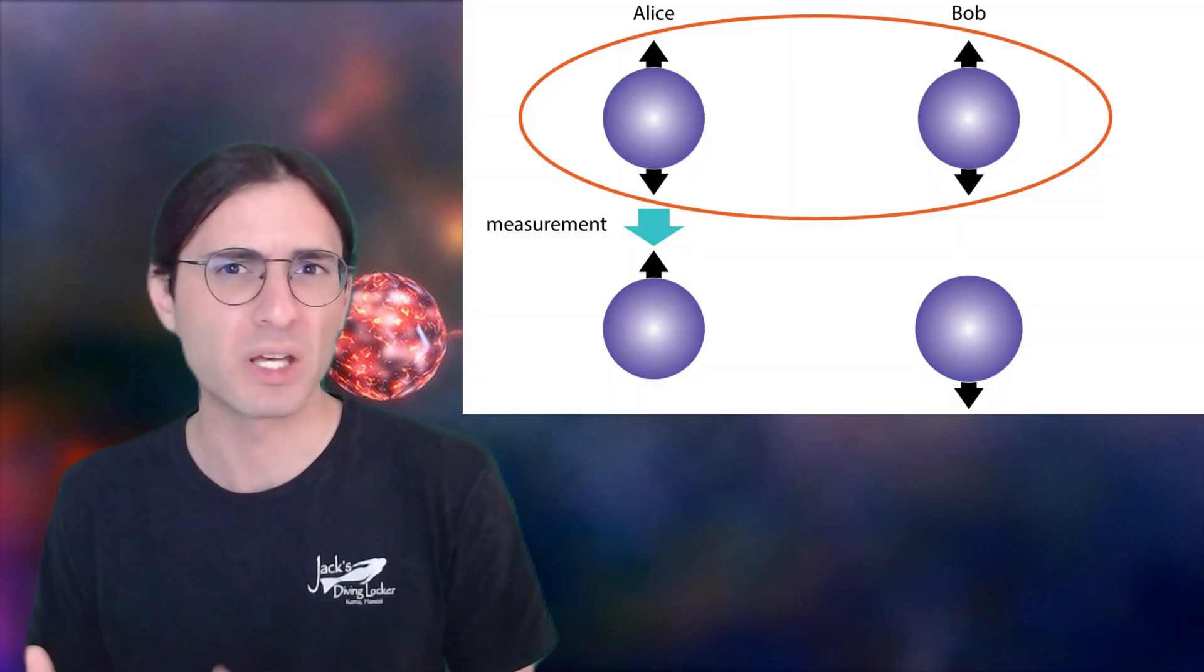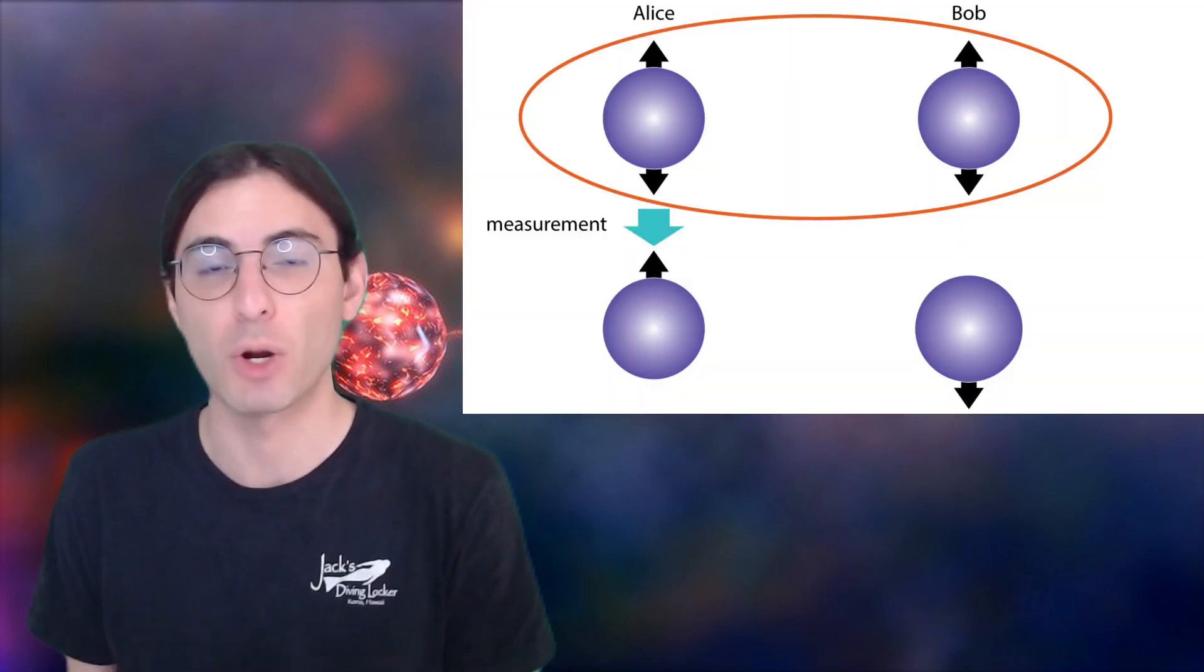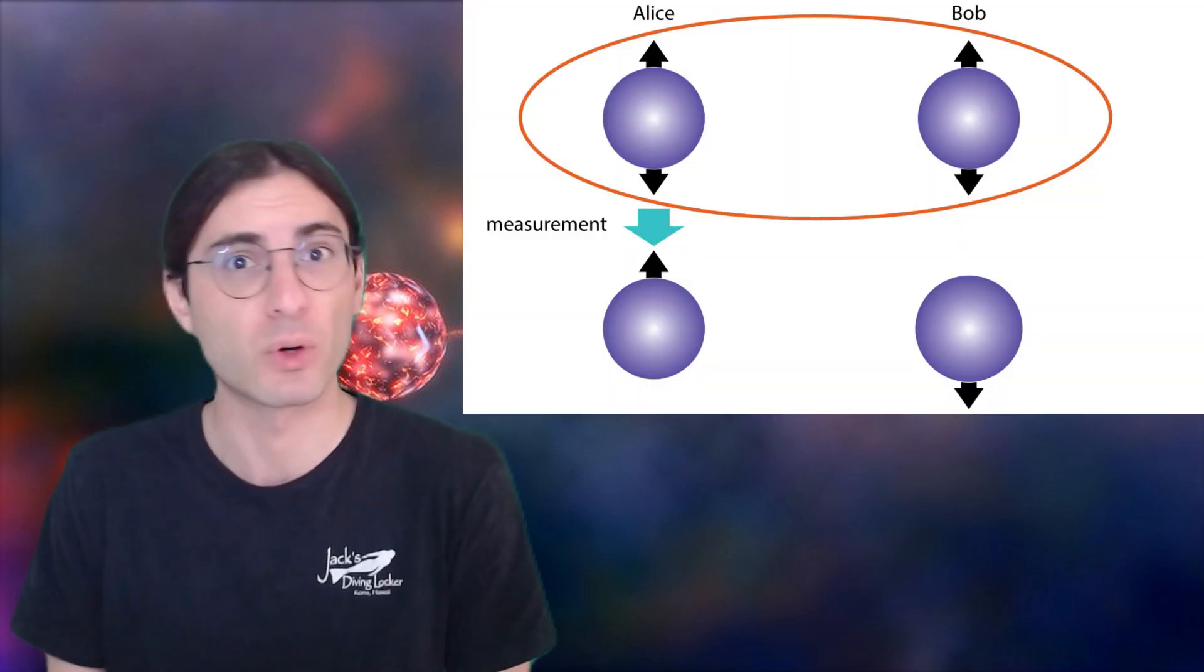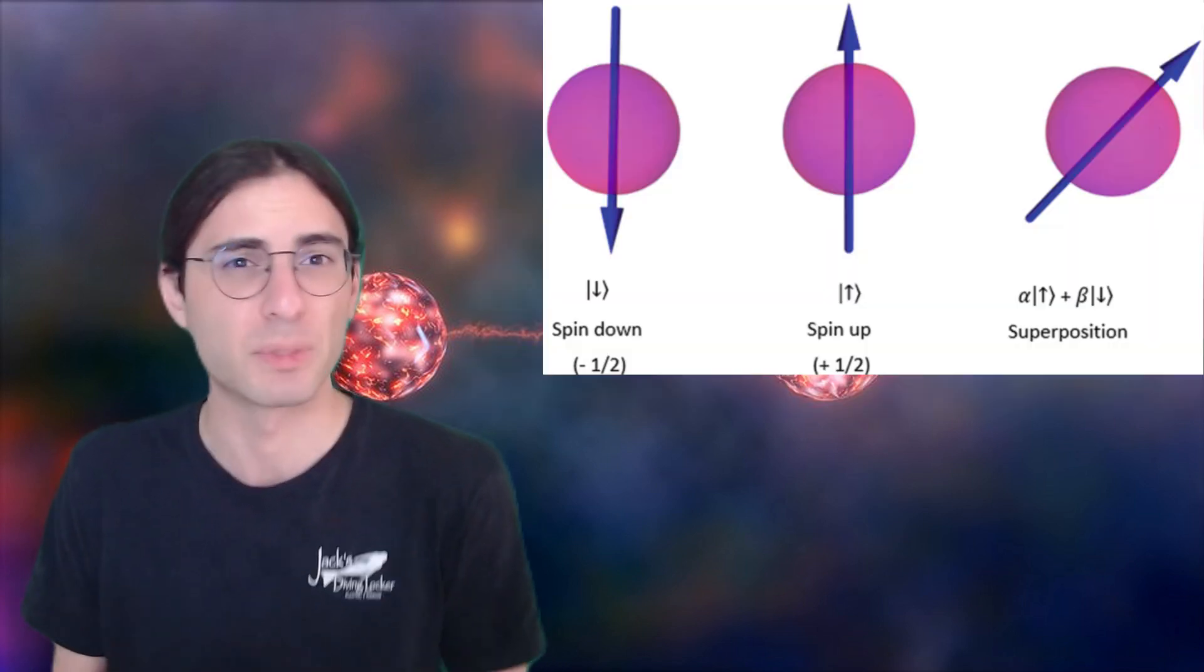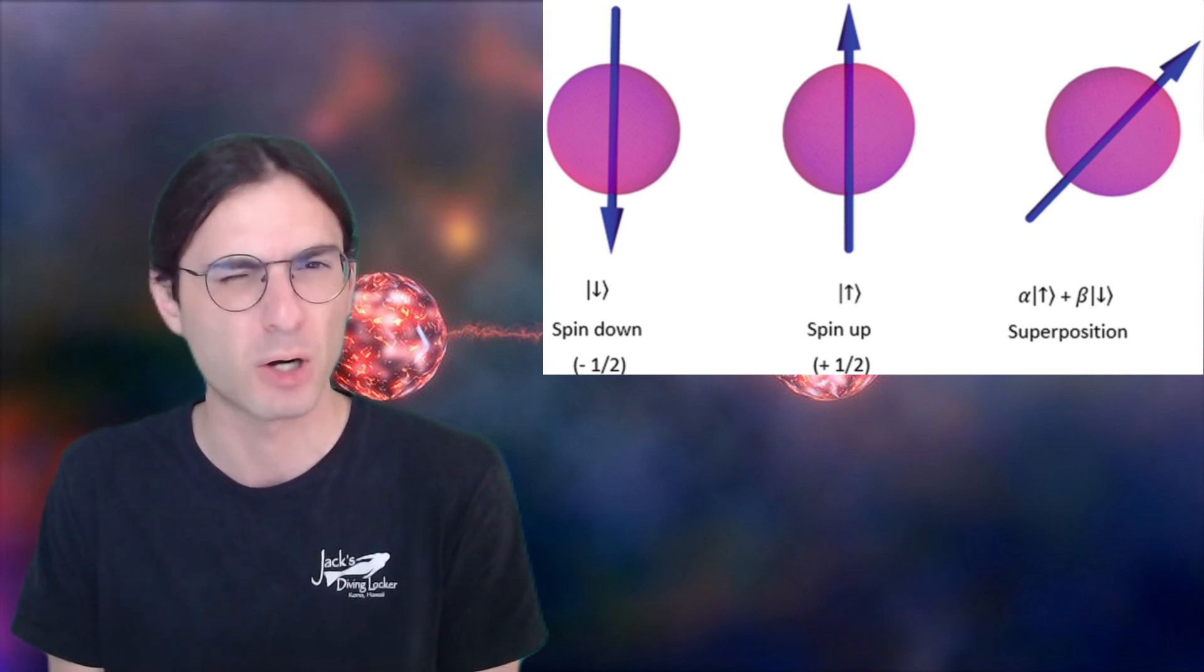Usually we think of entanglement as being about spin. For example, the quantum spins of two particles might be entangled so that they both always point in opposite directions. But despite how weird that is, it sort of seems okay, because the direction of the spin is not an inherent part of the particle.